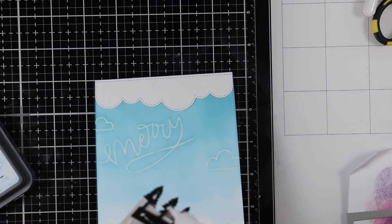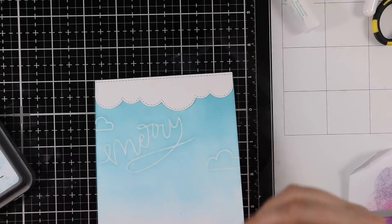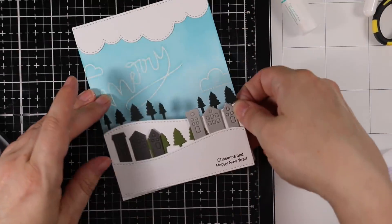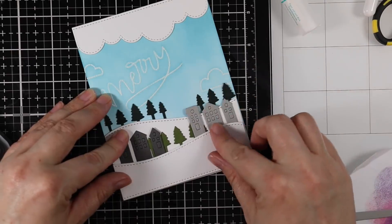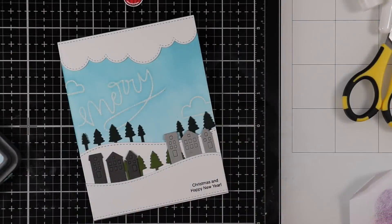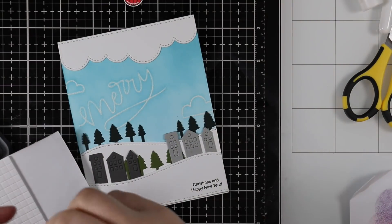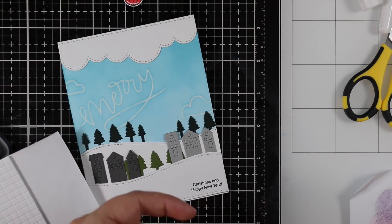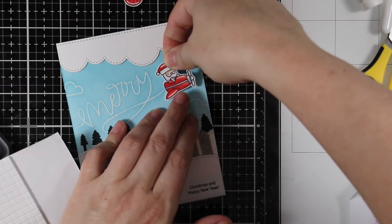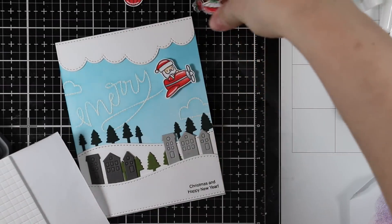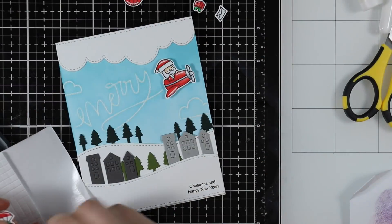Now I can adhere my little scene of hills and whatnot onto the front of this card. For the little Santa flying through the air and all the little whatnots, I pulled out my 3D foam square adhesive—these tiny little squares. I love these things. I'm going to pop all these images up with those foam squares to give that extra bit of dimension.